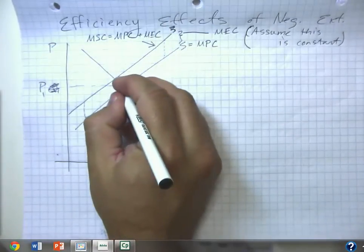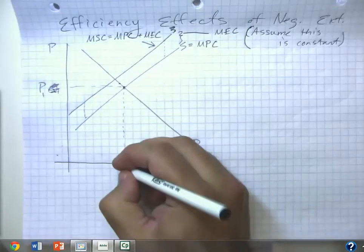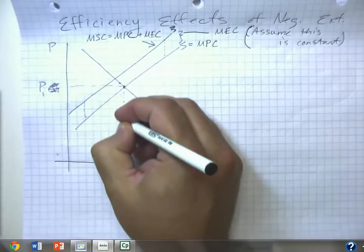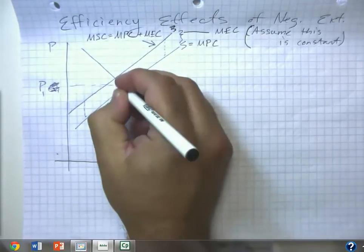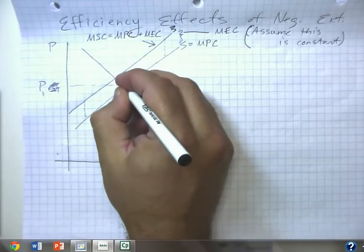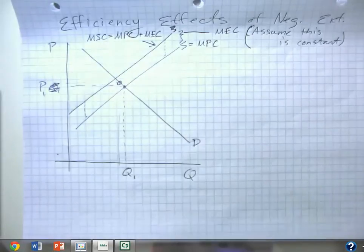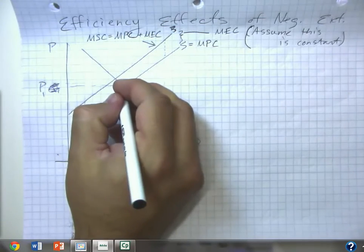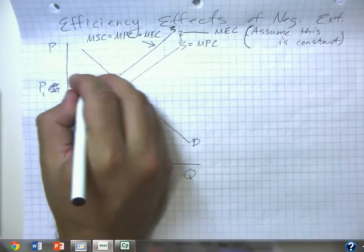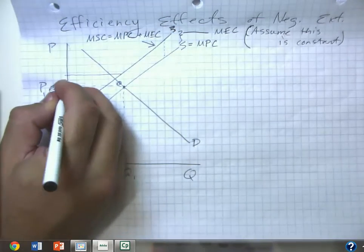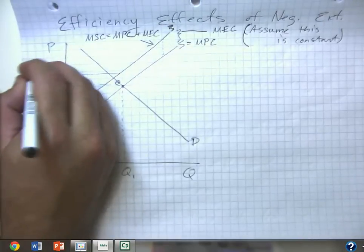Well, let's think about this unit right here. This unit that's produced right here is worth this amount to the buyers, and it creates this amount of total costs. So this is the marginal benefit.